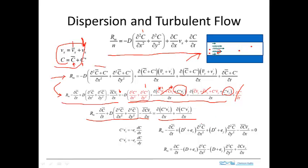What remains is the gradient of the product of the perturbed concentrations and the perturbed velocities — in x and in y. If we take the average of that product, because we're multiplying two perturbed values, the product of two perturbed values doesn't necessarily average out to be zero. This is the same kind of argument we used when developing the analysis for turbulent flow. Here in transport in turbulent flow, we get the same result — this product of two perturbed values does not average to zero, so that term stays.